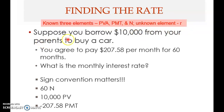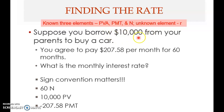Let's look at this example: suppose you borrow $10,000 from your parents to buy a car. You agree to pay $207.58 per month for 60 months. What is the monthly interest rate? This $10,000 is the present value of annuity — it's an annuity because you pay $207.58 per month for 60 months.